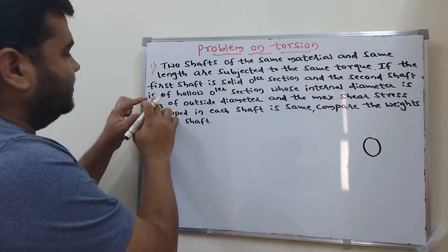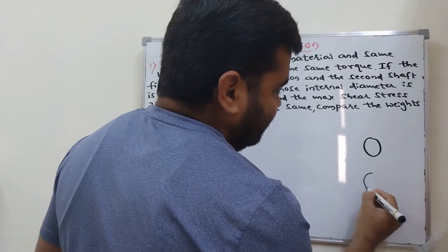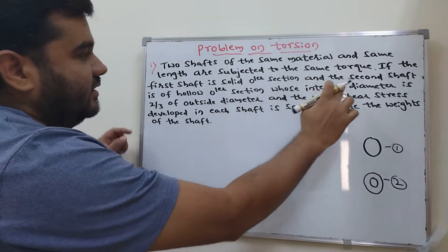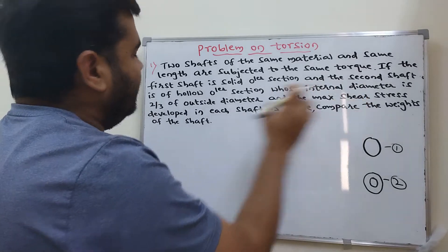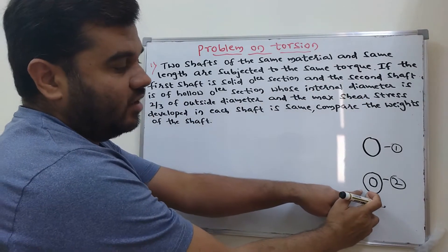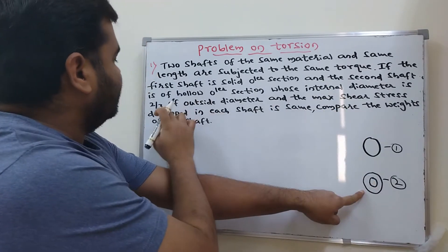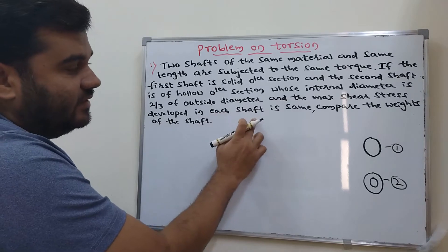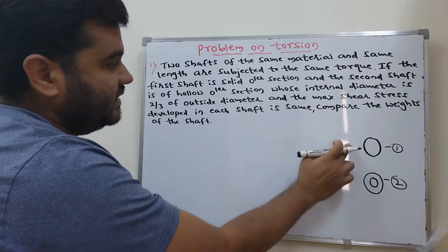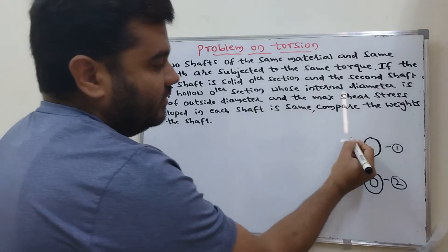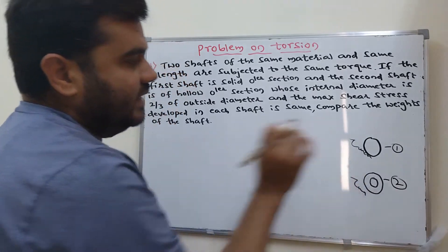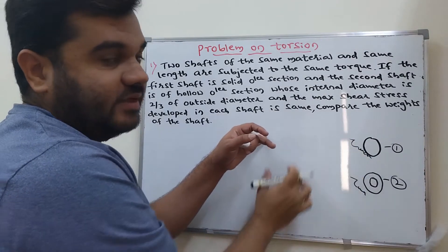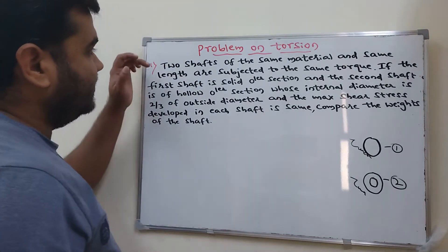The second shaft is of hollow circular section whose internal diameter is two-thirds of the outside diameter. The maximum shear stress developed in each shaft is the same. We need to compare the weights of the shafts — that is, find the ratio of weight of solid shaft to weight of hollow shaft.